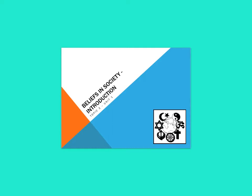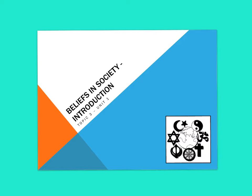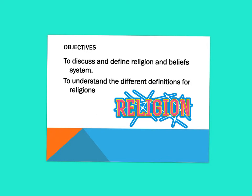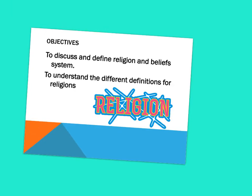Today's video is just going to be outlining the introduction for beliefs in society for the AQA module. This is really just outlining everything in terms of initial definitions and keywords that we looked at in lesson. In today's video we aim to discuss and define different religion and belief systems, and to understand the different definitions for religion, as well as several types of religions.